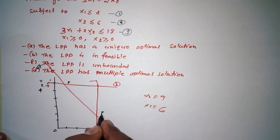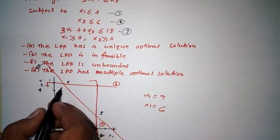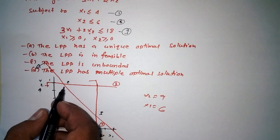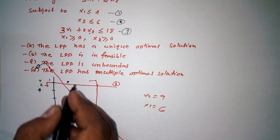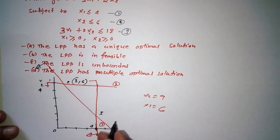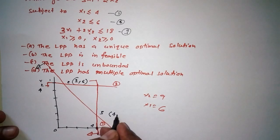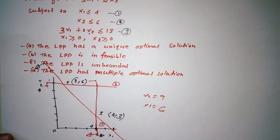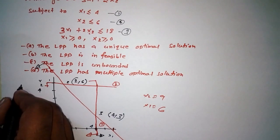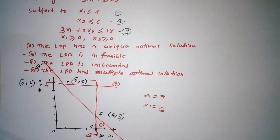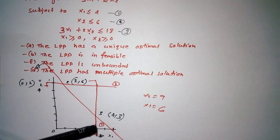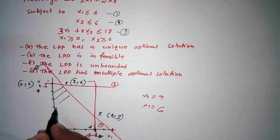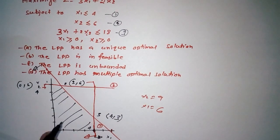We're getting four corner points here. To find the value of these points, we need to use a scale. Here we're getting (2, 6), at point three we're getting (4, 3), then (4, 0), and (0, 6). This shaded area is the feasible region.